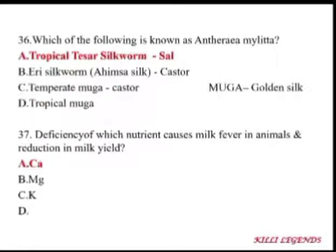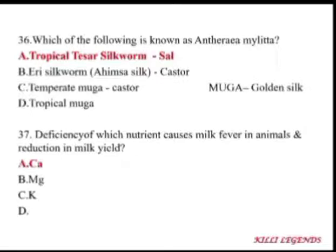Antheraea mylitta is the tropical tasar silkworm, which largely feeds on sal trees. Eri silkworm produces ahimsa silk because the pupa is allowed to emerge as a moth before the silk is taken — the pupa is not killed. Muga silk is known as golden silk and is a monopoly of India, produced in the northeastern region. Muga silkworm feeds on castrum crop.